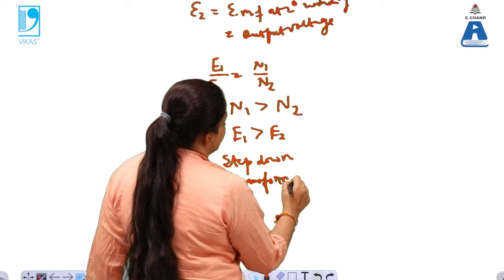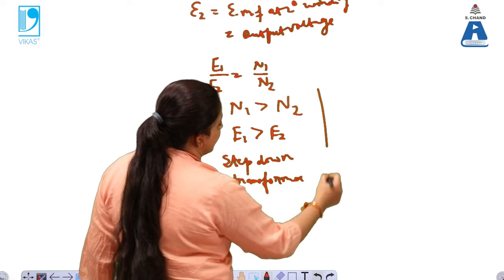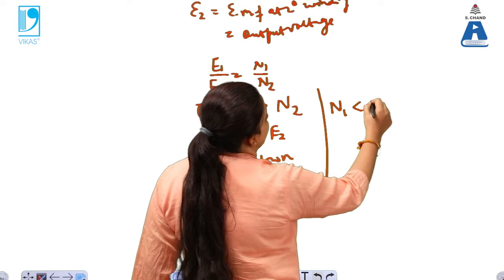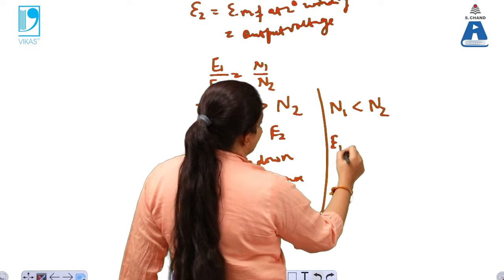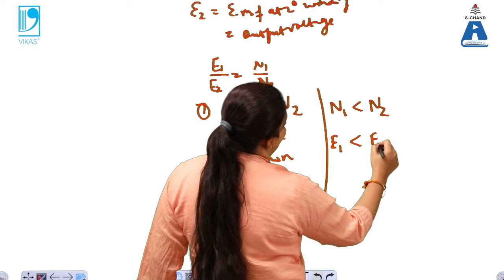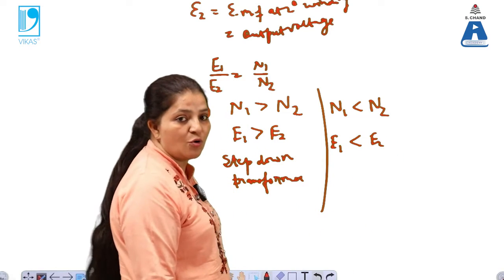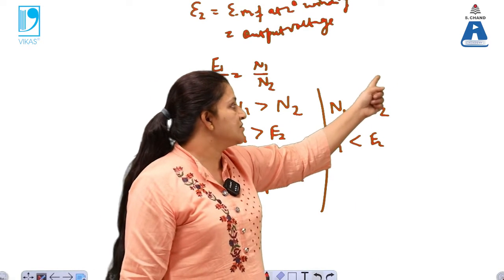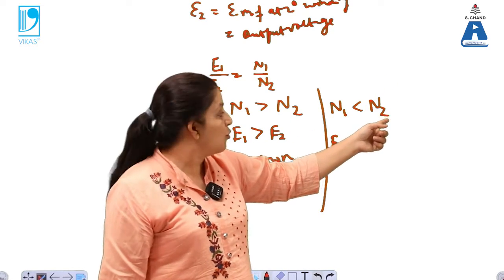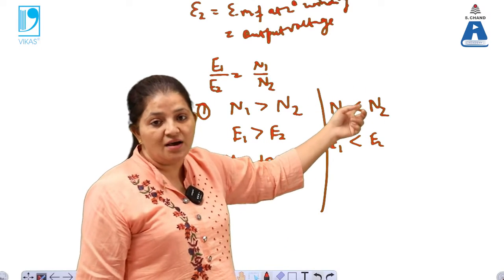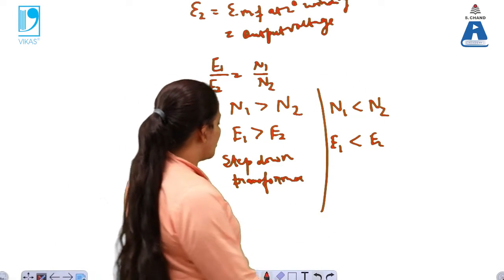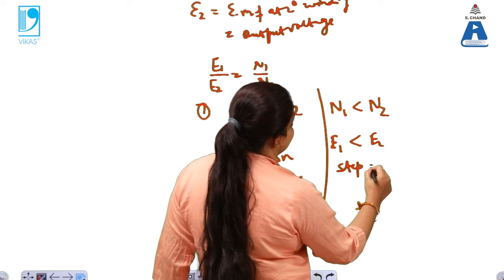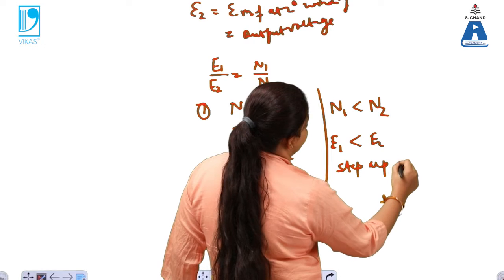In the second case, when N1 is less than N2, we get E1 less than E2, meaning the number of turns in the secondary winding is more than in the primary winding, so the output voltage is higher. Such transformers are known as step-up transformers.